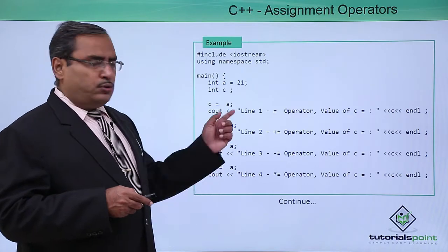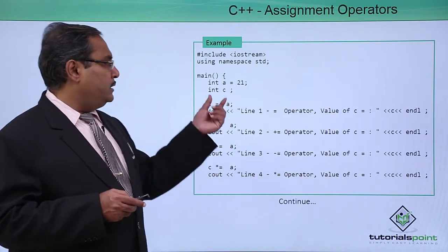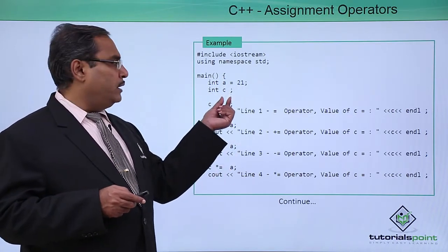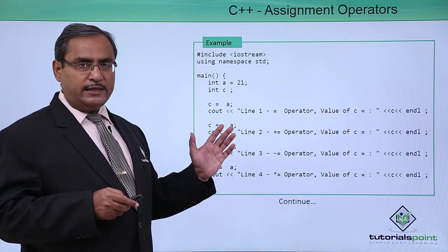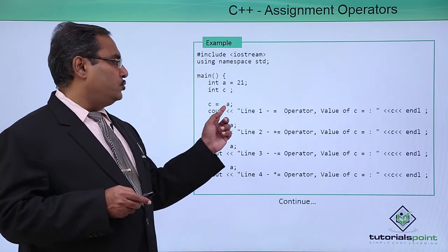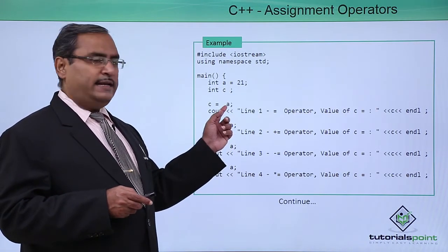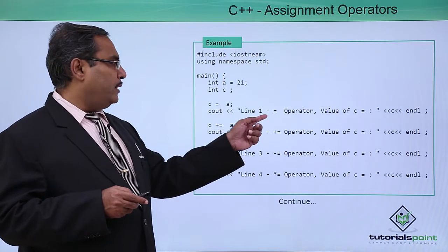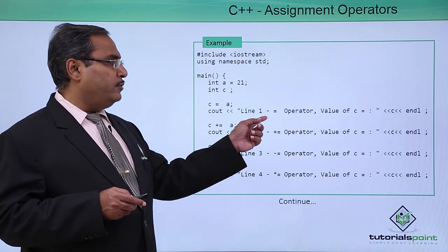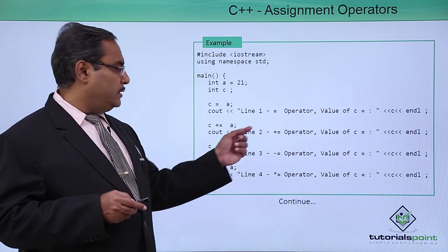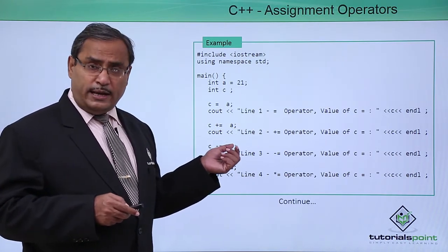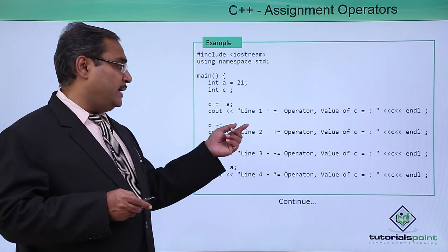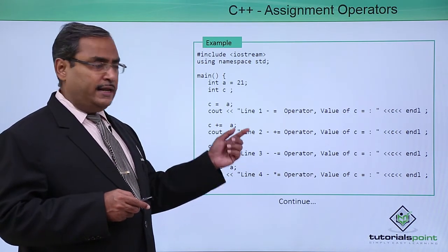Let us look at one program. The value of A is equal to 21 and C is uninitialized. If we assign A to C, then C will get 21, and we print the value of C. Then C += A means C is equal to C plus A, and the new value of C gets printed.